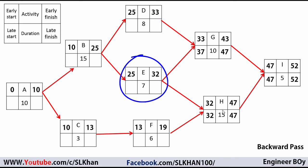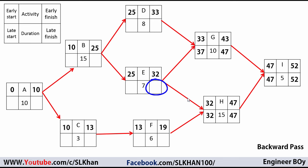Activity E feeds into both G and H. We have two late start values — 37 from G and 32 from H — and in the backward pass we take the minimum, which is 32 days. So the late finish of Activity E is 32 days. Subtracting E's duration of 7: the late start of E is 25 days.